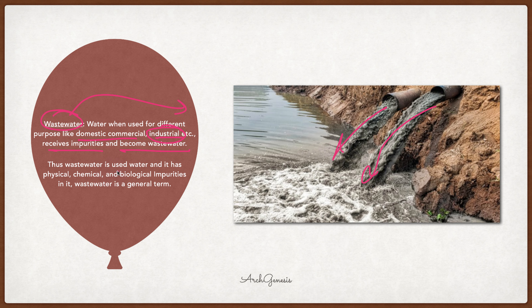Wastewater is used water. It has physical impurities — you will notice it is a different color — as well as chemical impurities with different chemical properties, and biological impurities such as bacteria or viruses. Wastewater is a general term for water that has become contaminated through use.